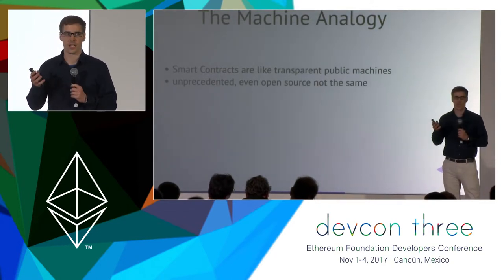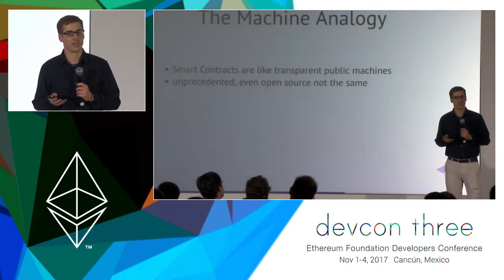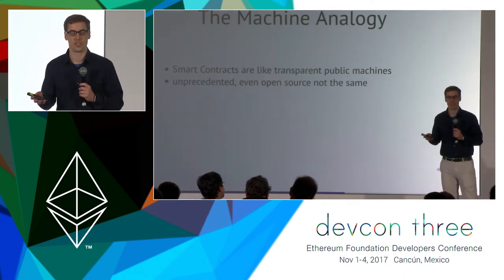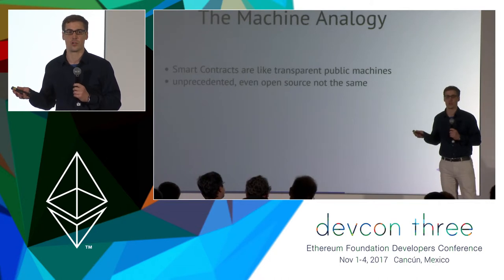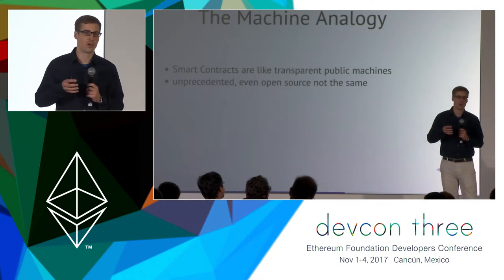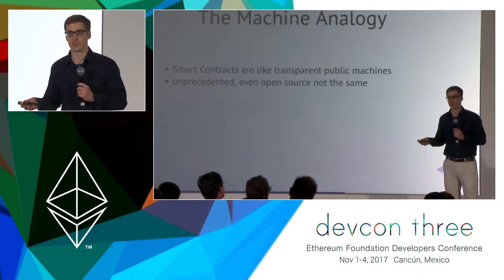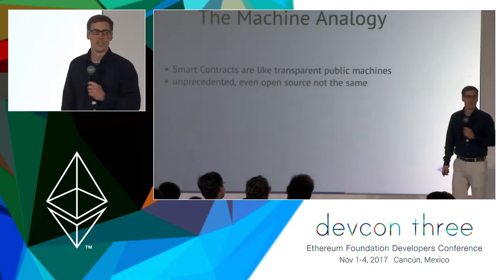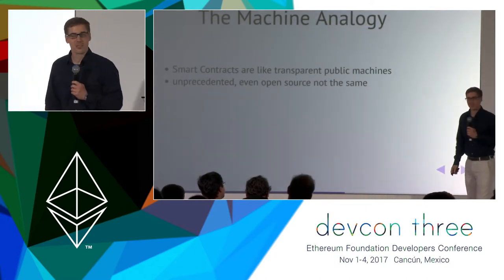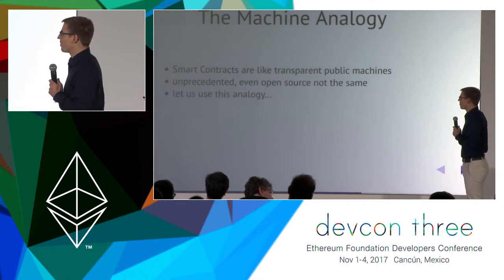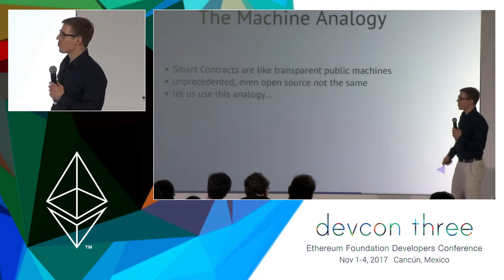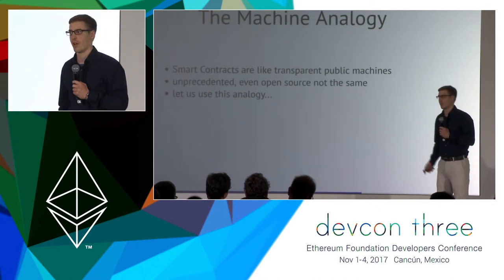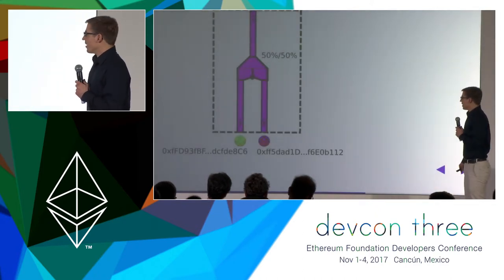We have a kind of similar thing with open source, because you can actually see how software is written. But that doesn't help you if some software runs on a server and you actually don't know whether that software was compiled from the source code. But with Ethereum, we actually can be sure about that. I would like to use this machine analogy and extend it into a programming language.